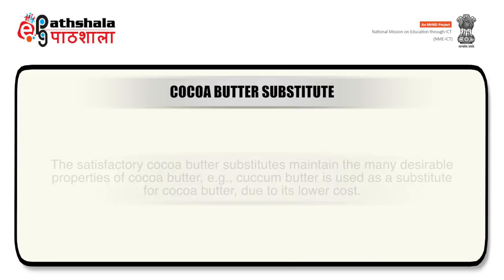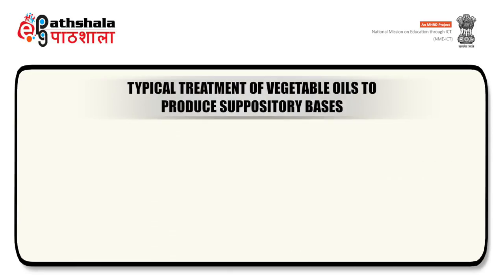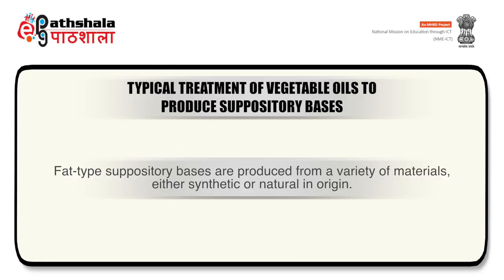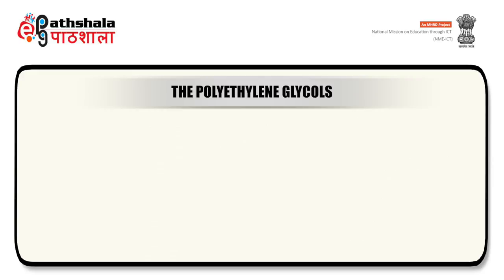Satisfactory cocoa butter substitutes maintain many of its desirable properties while addressing drawbacks like cost. Fat-type suppository bases are produced from a variety of materials, either synthetic or natural in origin. Vegetable oils like coconut or palm kernel oil are modified by esterification, hydrogenation and fractionation at different melting ranges to obtain the desired product.